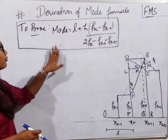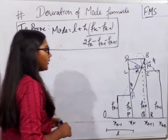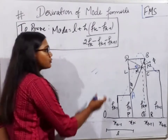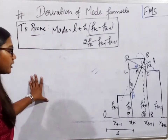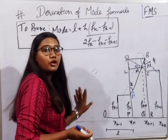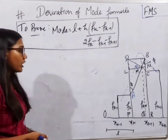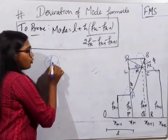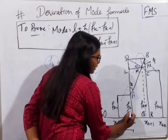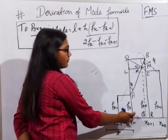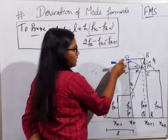I have drawn a histogram diagram here. From this histogram, we will derive the formula. Our modal class — where the mode lies — is where the maximum frequency fk occurs, in the interval xk to xk+1. In the diagram, the maximum frequency corresponds to the tallest bar, which has the greatest height. Now let's start the derivation using this diagram.